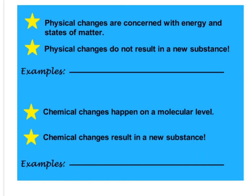Physical changes are concerned with energy and states of matter, so physical changes don't result in a new substance. So these will be like phase changes. Melting, freezing, boiling, those are all phase changes. Chemical changes happen on a molecular level, so chemical changes result in a new substance. So these would be things like oxidation, burning. We're going to be getting something new.